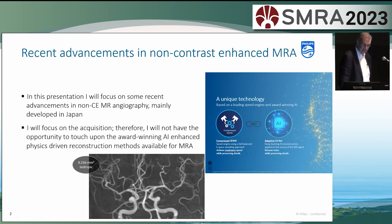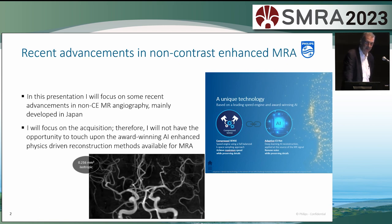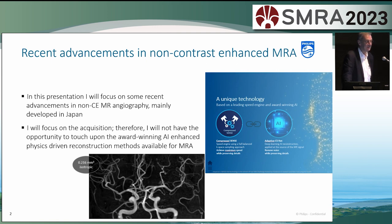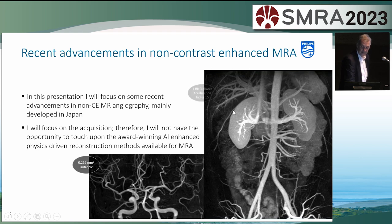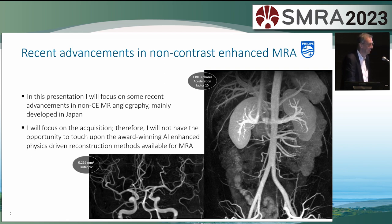It also means that unfortunately I cannot talk about the post-processing, the reconstruction, and mainly the AI reconstruction. Thanks to the sparsity of MRA data, we can get fantastic results. It's not uncommon now to get 0.5 millimeter cube isotropic images in a TOF MRA. This is contrast enhanced — three phases within one breath hold of 14 seconds, with acceleration factors of 15 — all become possible because compressed sensing is still at the heart of the reconstruction engine we are using.